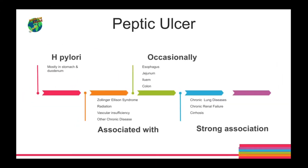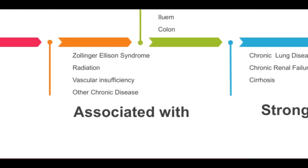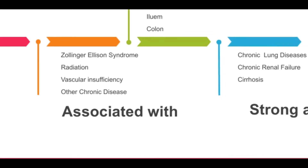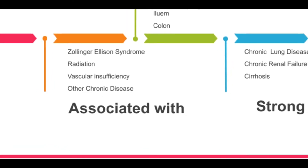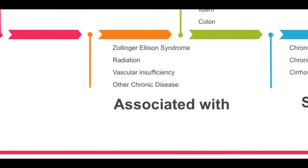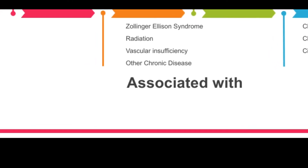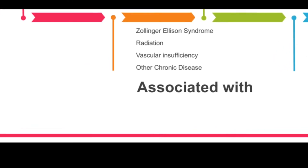Now let's discuss associations of certain diseases with peptic ulcer. Zollinger-Ellison syndrome is a rare condition in which one or more tumors form in the pancreas or the upper small intestine. The tumor, called a gastrinoma, secretes large amounts of the hormone gastrin. As a result, the stomach produces more acid, leading to peptic ulcer.